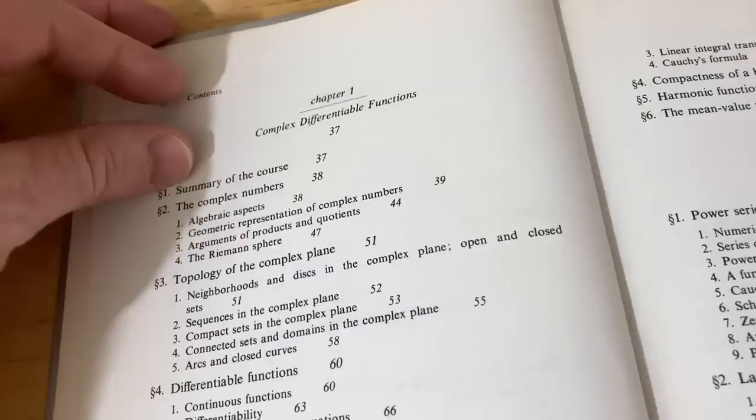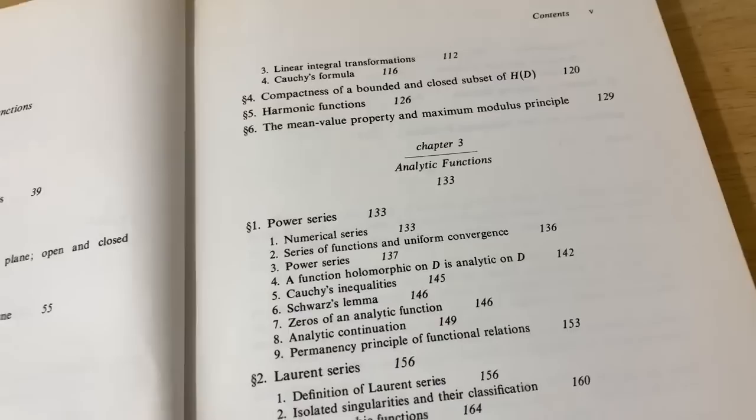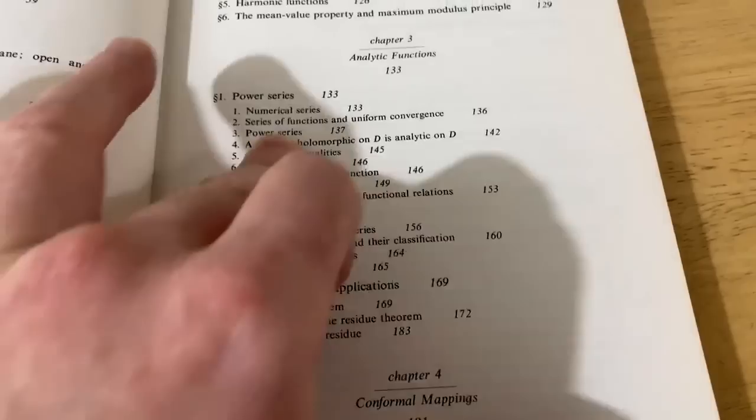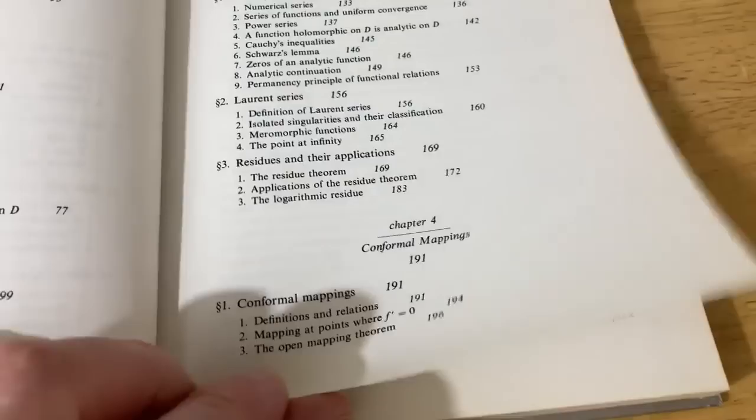Chapter one is on complex differentiable functions. Two is on holomorphic functions. Three is on analytic functions. This is something you'll see for sure. You'll see a lot of this stuff. But you'll see this in a complex variables class at the undergrad level if you take one. Conformal mappings, you'll see that at the end of the class, maybe.